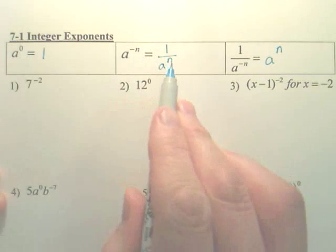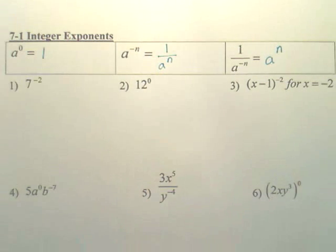Here, because it's negative, it goes to the bottom and it becomes positive. Basically, you don't want negative exponents. You want to get rid of all negative exponents. Alright, so let's try some problems.